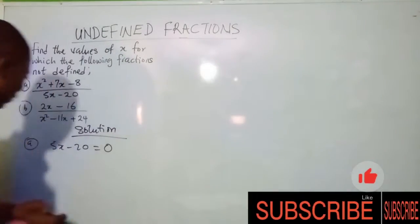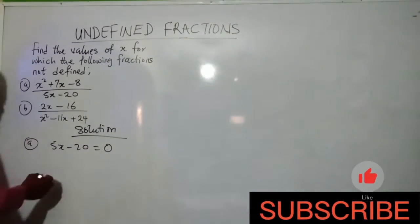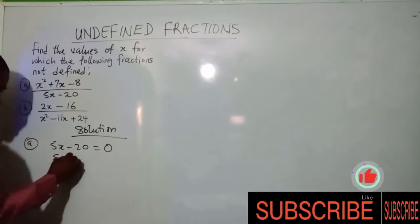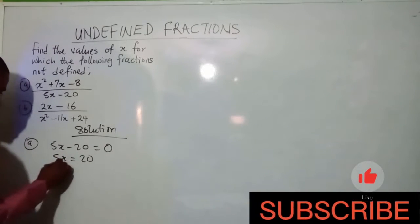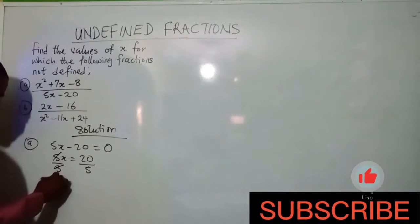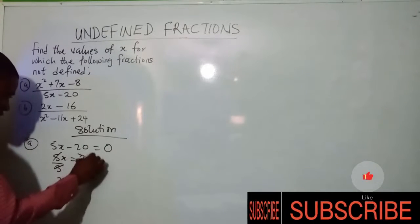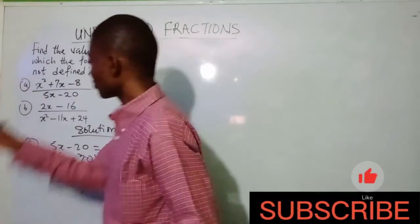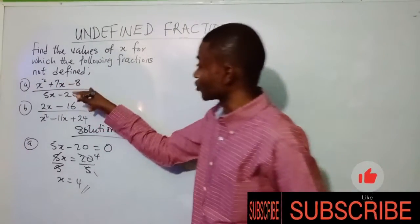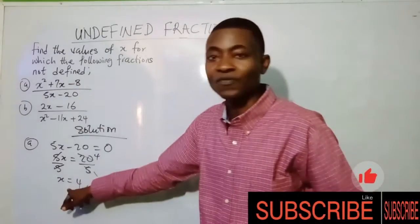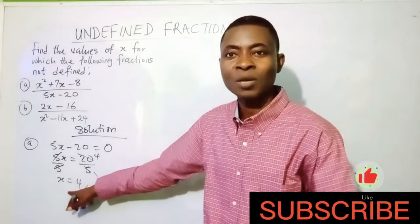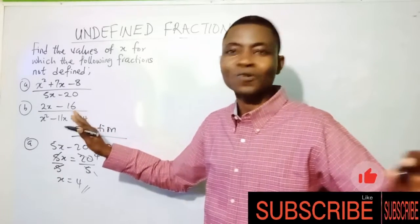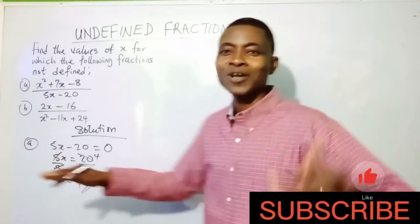This is just a linear equation. We collect like terms: 5s equals 20. Dividing both sides by 5 gives us s equals 4. Therefore, for this fraction to be undefined, the value of x must equal 4. Not difficult at all — very simple.